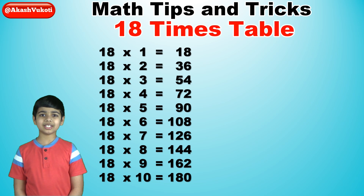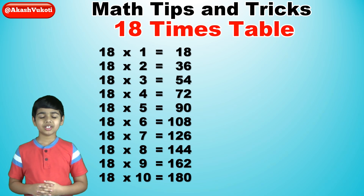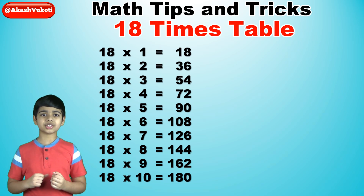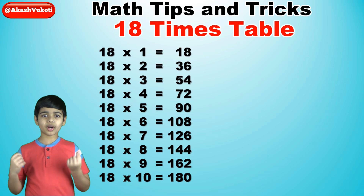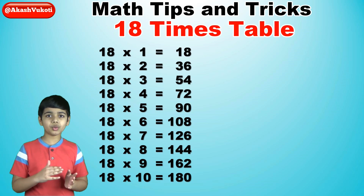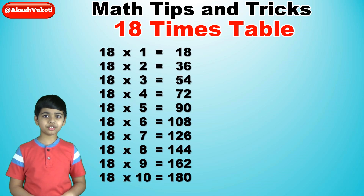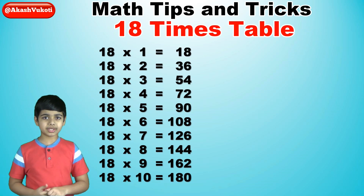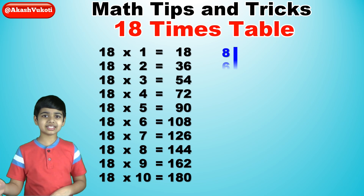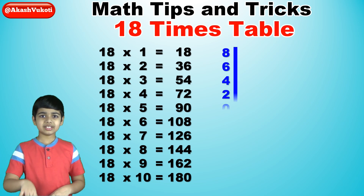Now we can begin learning this trick. First, for the ones digits, we'll just write the reverse of the 2 times table from 2 times 4 all the way to 2 times 0. Make sure to do this twice. So this would be 8, 6, 4, 2, 0.